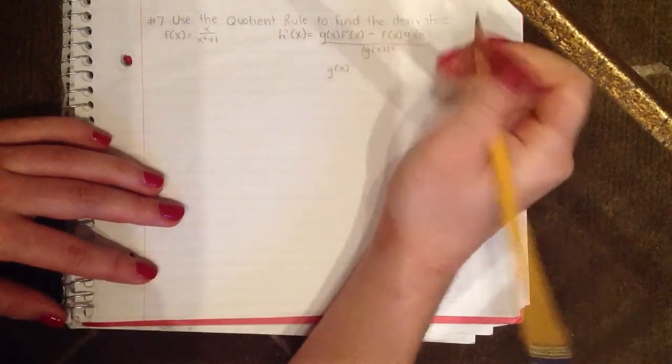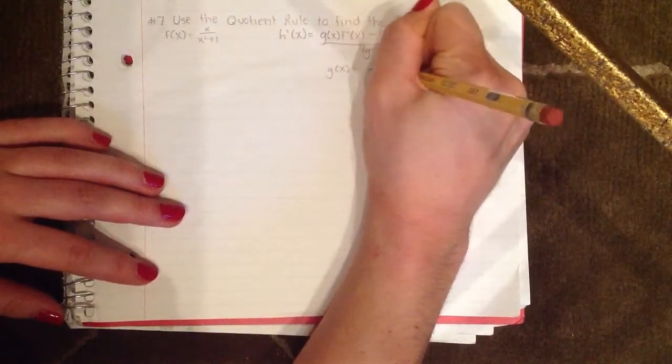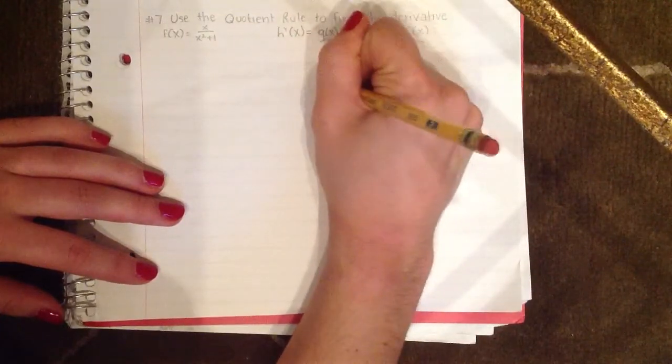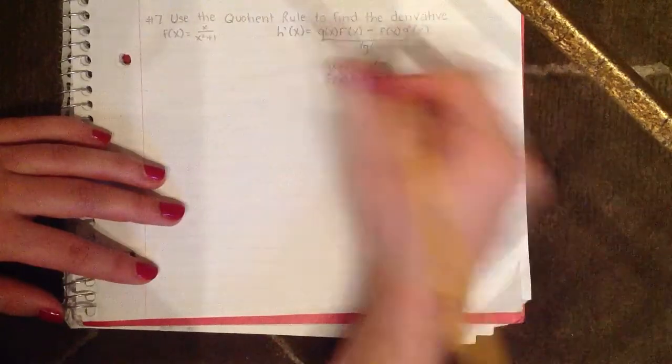So g(x) in this equation is the denominator, so that would be x² + 1. f(x) equals the numerator, which is just x.